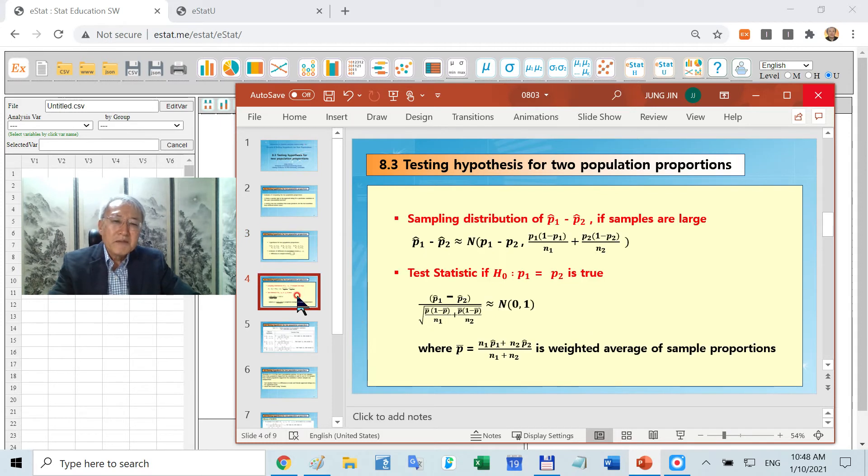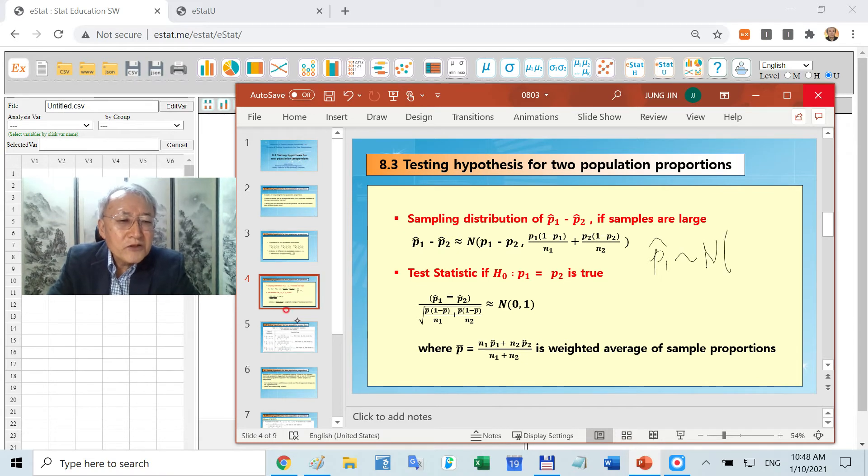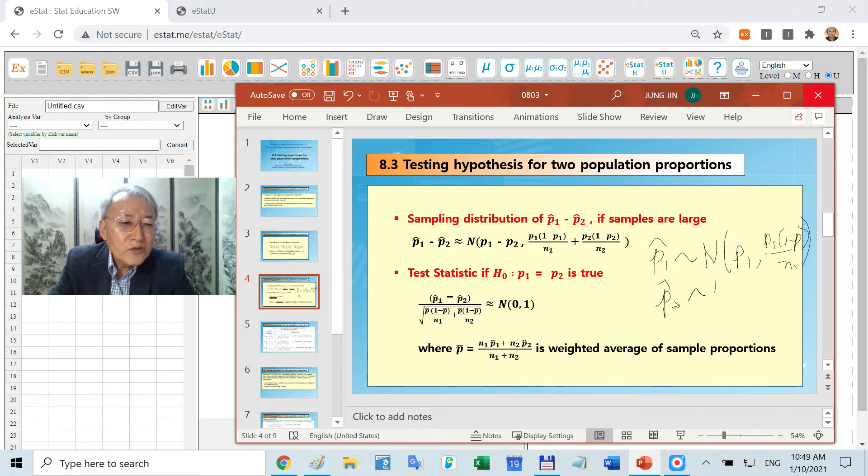Do you remember these things? In case of sample P1 hat, if the sample size is large, it follows normal P1, and then P1 times 1 minus P1 divided by N1. In case of P2 hat, we can write down similarly. It is a normal distribution like this: P2 and P2 times 1 minus P2 divided by N2.